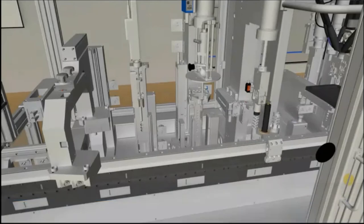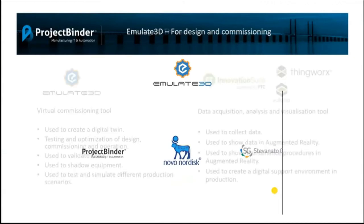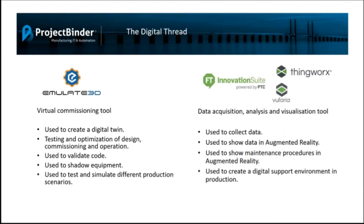We are also taking a lot of data from this machine and putting it back into the digital twin. Taking the data from the real machine and populating it back into the virtual twin system gives us a lot of possibilities to improve the program, improve error mistakes, and so on, so we can keep the uptime on the production line high.